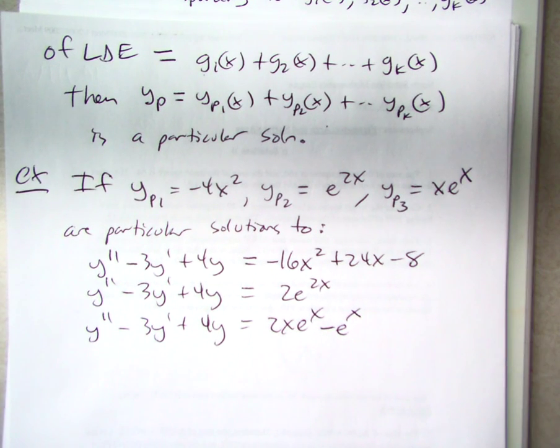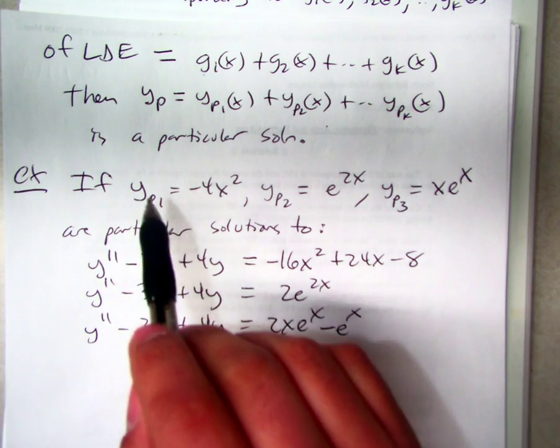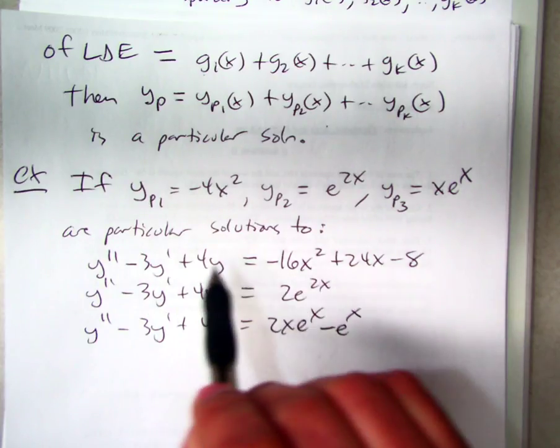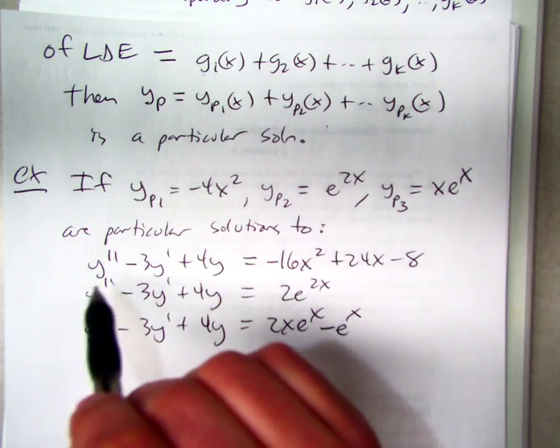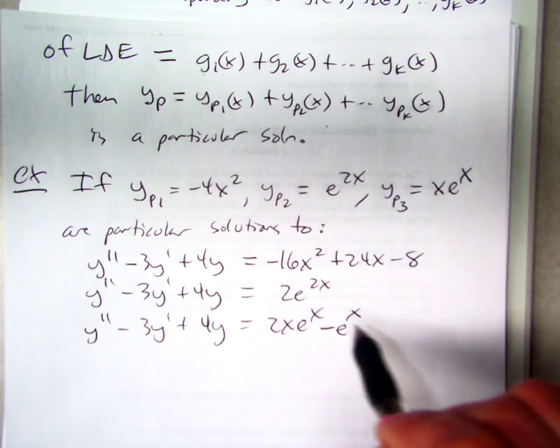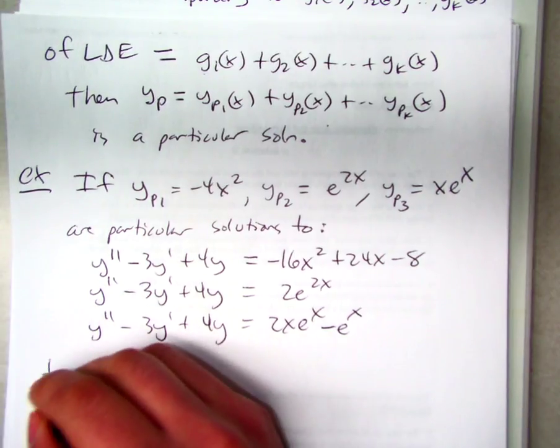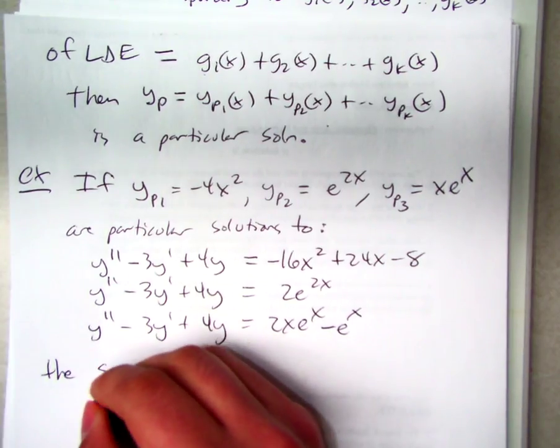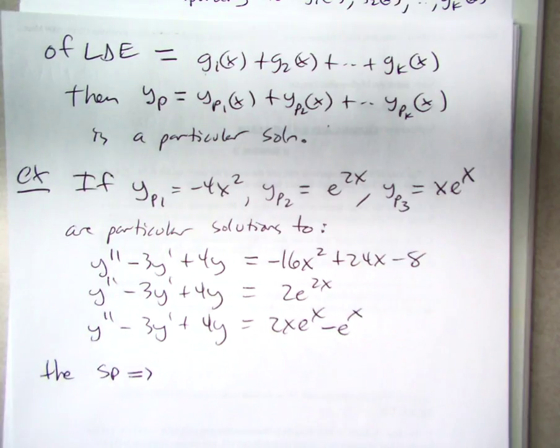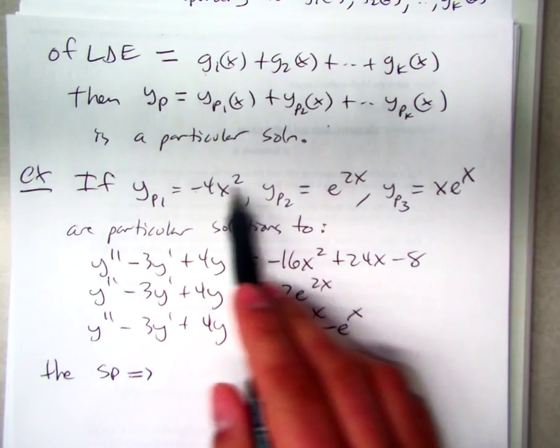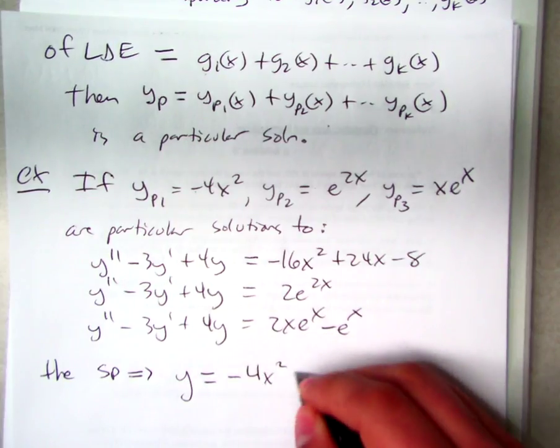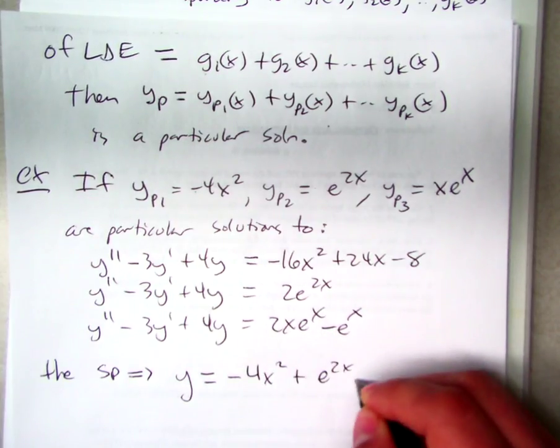So all I'm saying is YP1, it's a particular solution that works for this first one. YP2, particular solution that works for this second one. And then YP3 is a particular solution that works for this third one. Then by the superposition principle for particular solutions, we can combine all of these into one function, call it Y equal to minus 4X squared plus E to the 2X plus XE to the X.